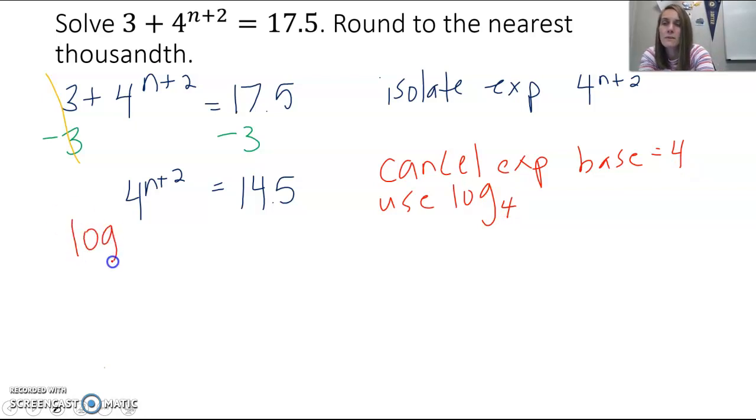So I'm going to do log base 4 of both sides. Log base 4 of 4 to the n plus 2 power equals log base 4 of 14.5. Because we have log base 4 and 4, those cancel out with each other. The exponential has base 4, the logarithm has base 4. They're inverse operations, so we're left with just n plus 2 on the left side.